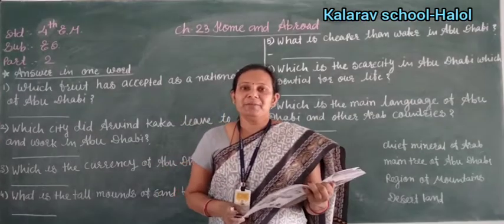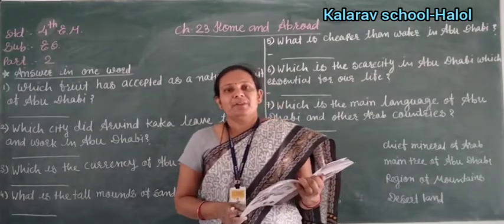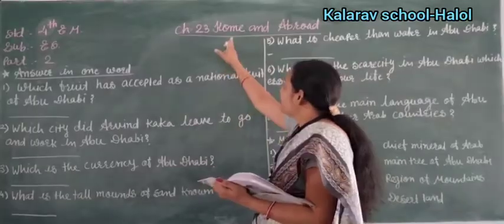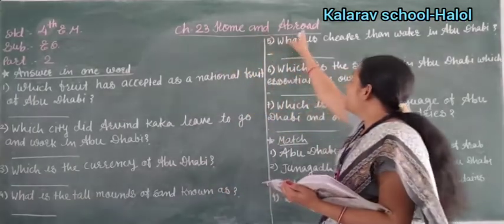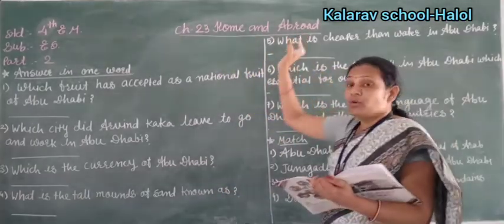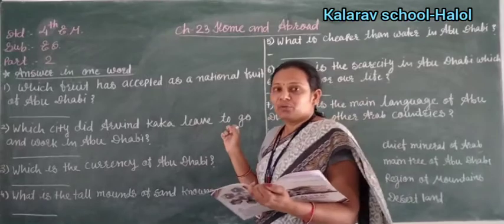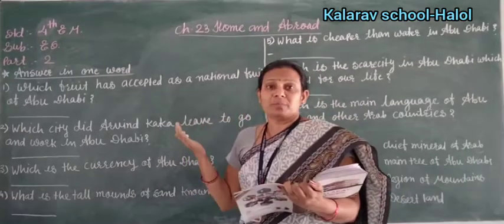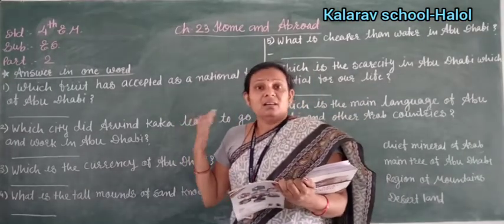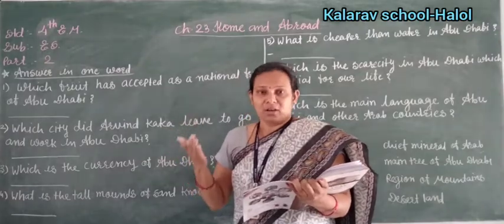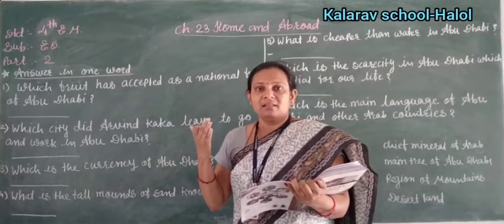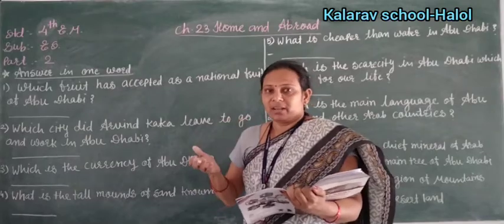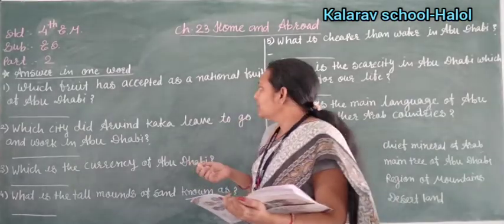Hello students, how are you? Today we are going to continue our chapter number 23, Home and Abroad. Home means where we live — it is in India, right? And abroad means out of the country, that is foreign — America, Abu Dhabi, Canada, whatever, out of the country.